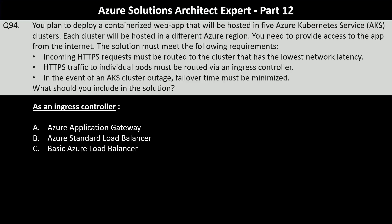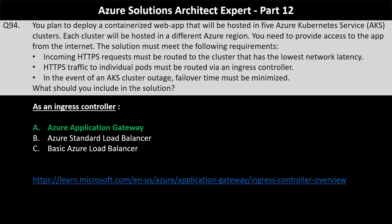For the ingress controller, your options are Azure Application Gateway, Azure standard load balancer, or basic Azure load balancer. Azure Application Gateway is the correct choice. It can function as an ingress controller for AKS using the Application Gateway Ingress Controller, supports secure HTTPS traffic routing, and integrates with AKS for port-level traffic management. Application Gateway also includes health probes to monitor backend health and automatically reroute traffic in case of failures.